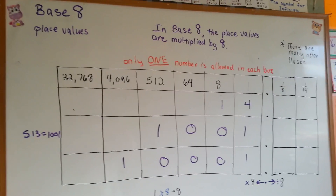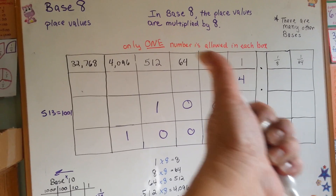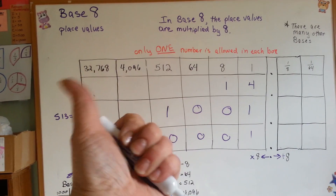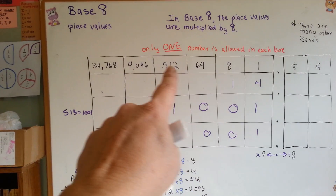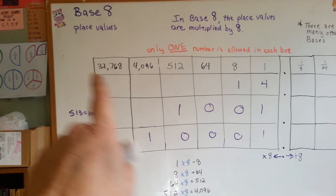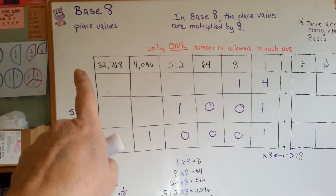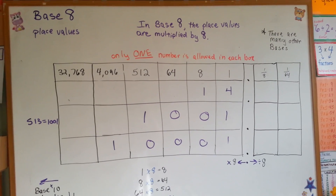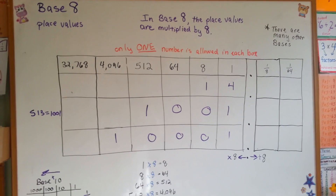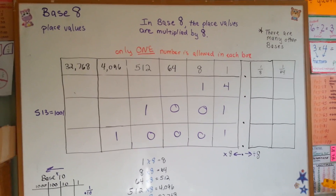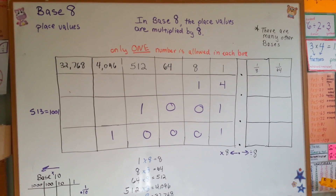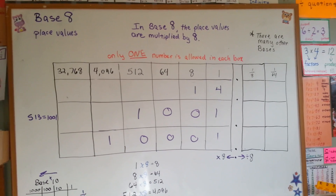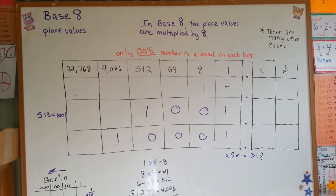That's base eight. Just keep multiplying on the left of the decimal point times eight for each of these numbers, and you'll be able to get your base eight table made. That wasn't that hard, was it? We're going to discuss base seven next. By now you can probably figure out how that table would be made. See you there!